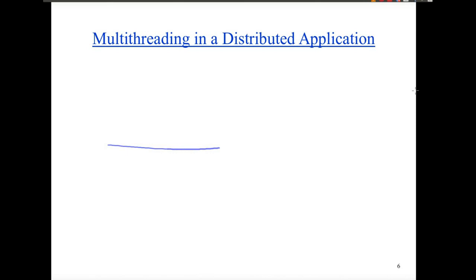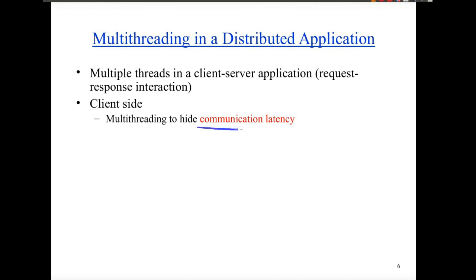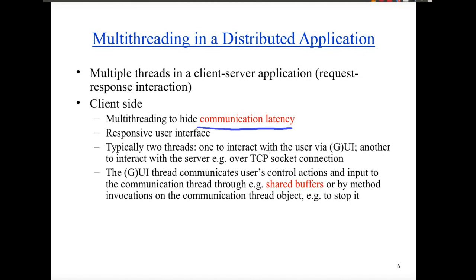The benefits of multi-threading in a distributed application: in a distributed application, multi-threading can be beneficial in several aspects. For example, multiple threads in a client-server — both on the client side and on the server side — can be helpful. On the client side, multi-threading can help you hide communication latency and create a responsive user interface. There are typically two threads: one to interact with the user via the UI and another thread interacting with the server, for example making a TCP connection to a remote server. These two threads communicate through a shared buffer or by method invocation on the communication thread object.